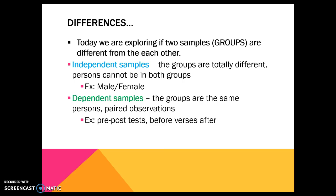We have two choices. It can either be an independent sample or a dependent sample. If it's an independent sample, that means the groups are completely different and you can't be in both groups — you are either in one or the other. So you're either a male or a female, you either live in Colorado or you live in California. You can't be in both.